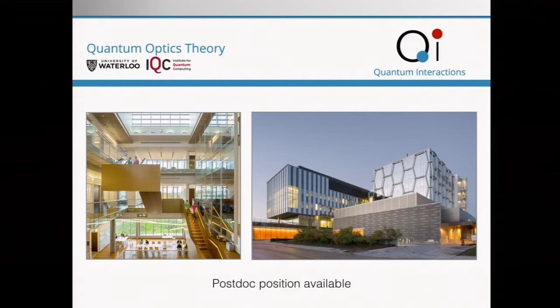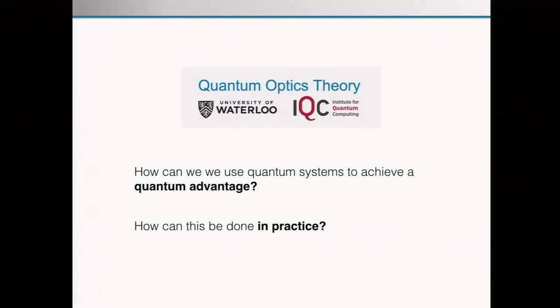So if you're interested or you know somebody who's interested, before I actually start with my talk, let me briefly introduce what we're doing. We are looking into the question of where we can do things that give you a quantum advantage, but not only on paper or on the whiteboard, but also in proof-of-concept experiments. We are a theoretical group, but we work very closely with experiments. Our two main research tracks are quantum networks and quantum simulations.